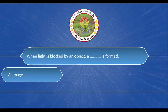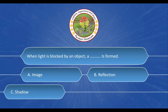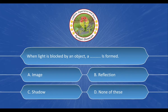Next question: When light is blocked by an object, a ___ is formed. And the options are: A. Image, B. Reflection, C. Shadow, D. None of these. And the correct answer is option C. Shadow.